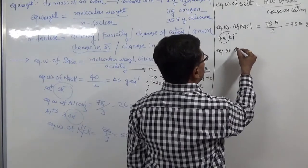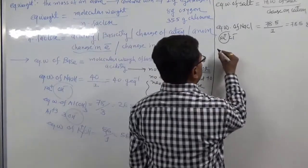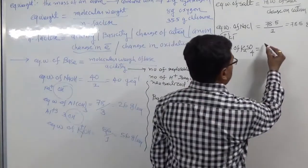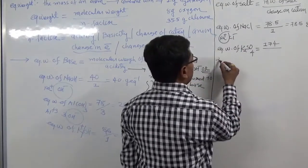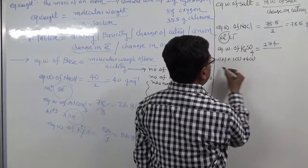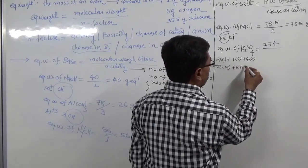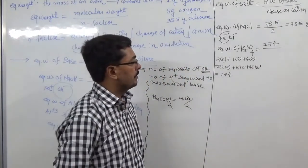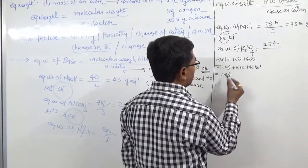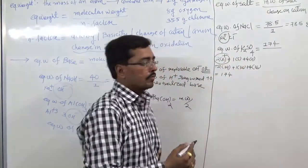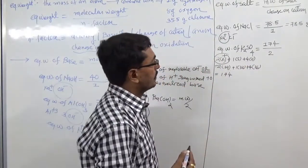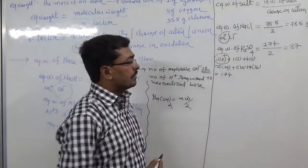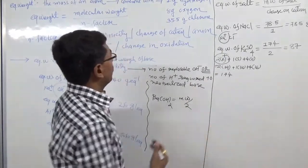For potassium sulfate K₂SO₄, molecular weight is calculated as: two potassium (2×39=78), one sulfur (32), and four oxygens (4×16=64), giving a total of 174. Potassium has a charge of +1 and there are two potassium ions, so total cation charge is two. Therefore 174 divided by 2 gives an equivalent weight of 87 gram per mole.